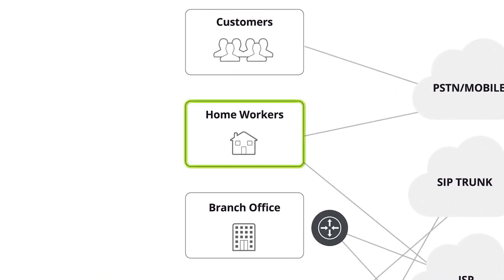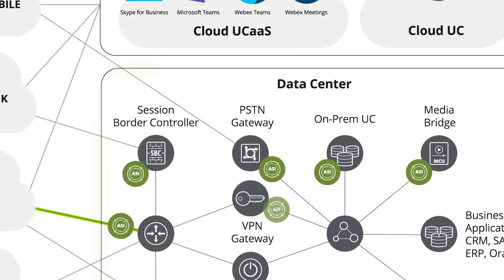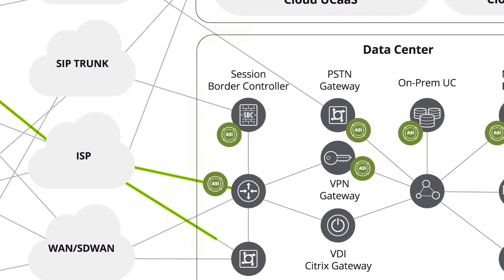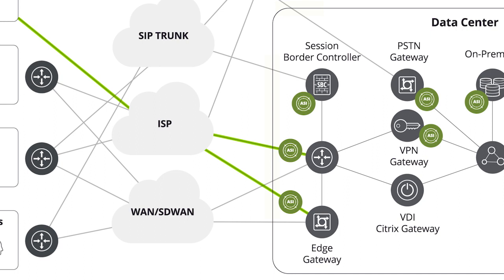Moving on to the home worker — their calls using enterprise UC will still come into the data center. So instrumenting at the edge, the data center internet pipe, will tell you how it's coping with all the traffic coming into it. Does it need to be upgraded? Visibility at the VPN concentrators will help you diagnose its health — is it being overburdened with the increased load demanded by the home workers? Does it also need upgrading? Where home workers are not using VPNs for voice and video, they may still have a direct connection over the internet to an edge gateway, so visibility at that point makes a lot of sense for the same reasons. These instrumentation points will provide vital evidence to IT to establish that the call quality is degraded due to something in the home, internet, or somewhere within the data center itself.